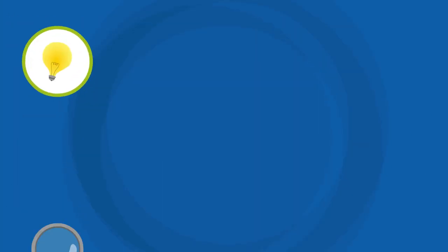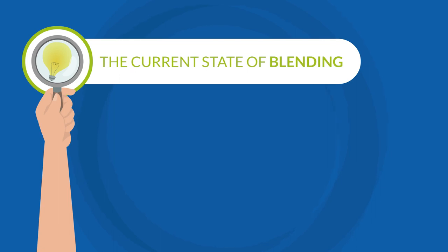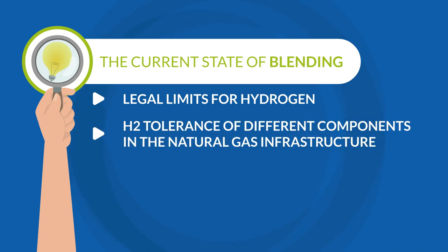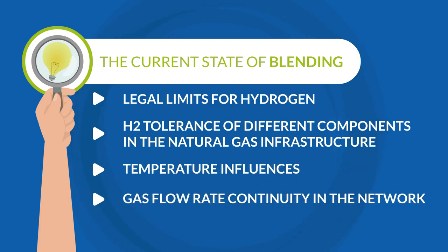To help you understand the current state of blending, we have summarized the five most important points for you: one, legal limits for hydrogen; two, H2 tolerance of different components in the natural gas infrastructure; three, temperature influences; four, gas flow rate continuity in the network; and five, the storage proximity.